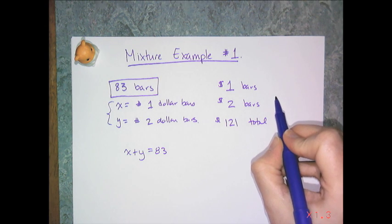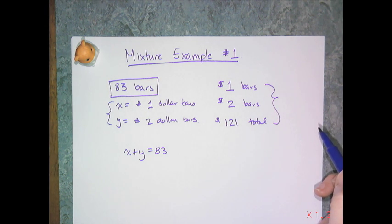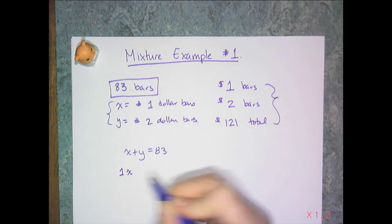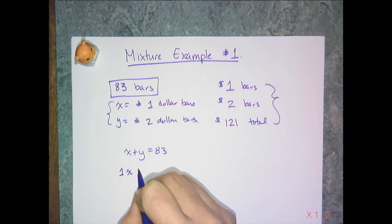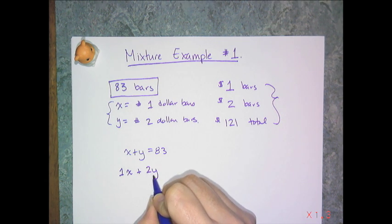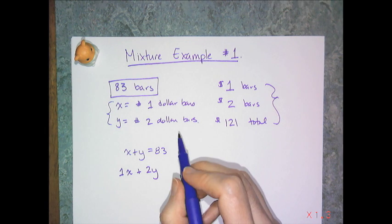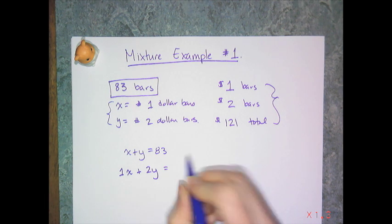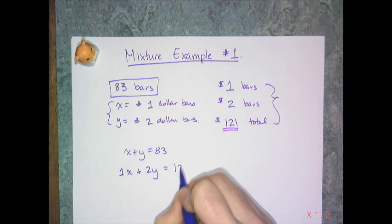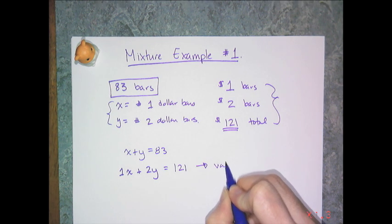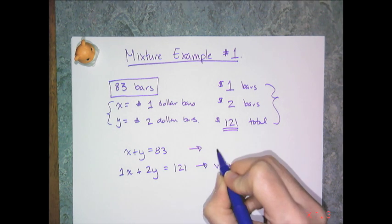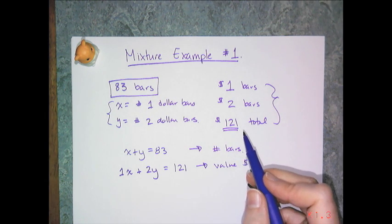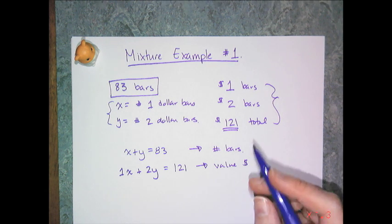My second equation is going to deal with the value of the bars, or how much they cost. So, if I have x $1 bars, then the total value of the $1 bars is 1 times x, and then 2 times y represents the total value of the $2 bars, because they were each $2, and I have y of them, so 2 times y is the total value. And I know the overall intake of money was 121. So, this equation deals with the value in dollars, and this equation deals with the actual number of bars. And my two units were numbers of bars and values.